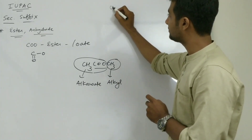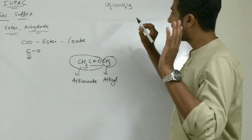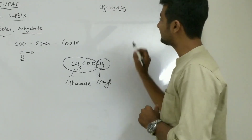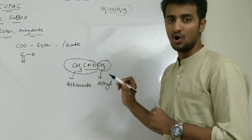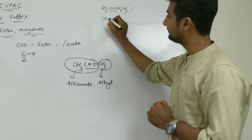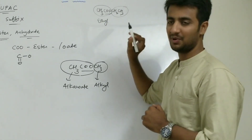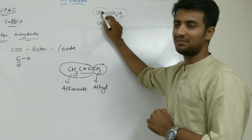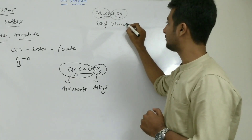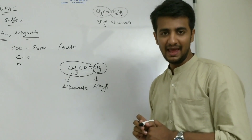Now I am giving you the nomenclature of this compound: CH3 — C double O — O — CH2CH3. First, we consider the C double O. On the right side of C double O, there are two carbons — so 'eth' — and they are the alkyl group, so we write 'ethyl'. Now the rest of the carbons including C double O: two carbons means 'eth', all single bonds so '-an', and the suffix is '-oate'. The name of this compound will be ethyl ethanoate.